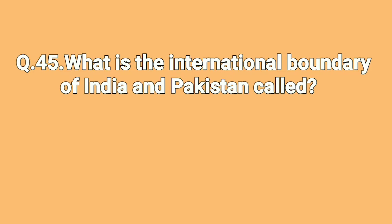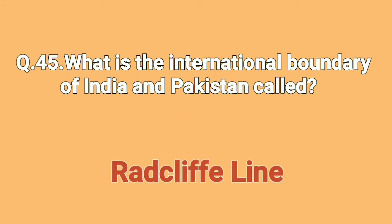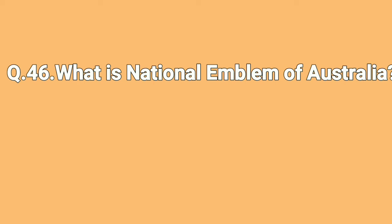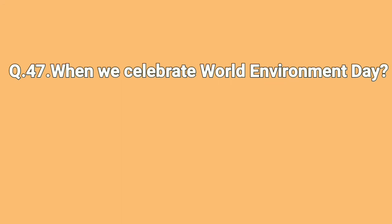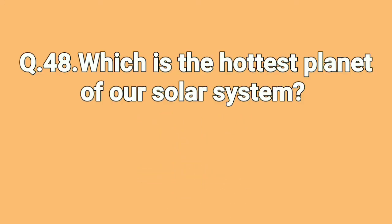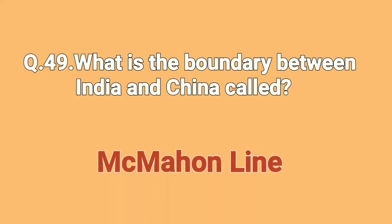What is the international boundary between India and Pakistan called? Radcliffe Line. What is the national emblem of Australia? Kangaroo. When do we celebrate World Environment Day? 5th June. Which is the hottest planet of our solar system? Venus. What is the boundary between India and China called? McMahon Line.